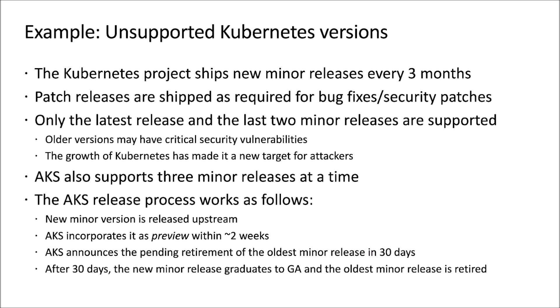The Kubernetes project is fast moving. It ships new minor releases about every three months on a fairly consistent cadence. The most recent release was 1.18 at the end of March, and 1.19 is scheduled to be released at the end of June. Those are minor releases; patch releases are then shipped as required for bug fixes and security patches — for example, 1.18.1, 1.18.2, and so on.